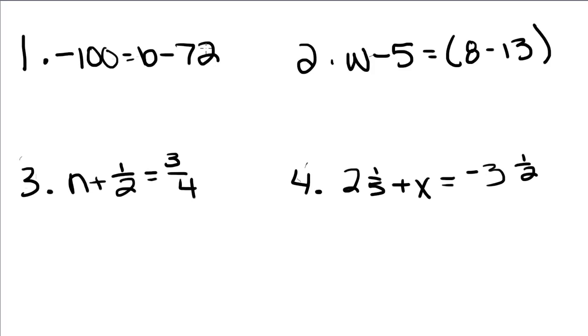So when we want to get b by itself, we have to do the opposite of subtraction, which is addition. So here we're going to add 72, because that's going to give us 0, and we're going to add 72 to the left as well. And that's going to give us negative 28 is equal to b.